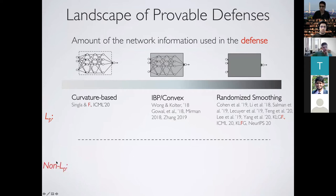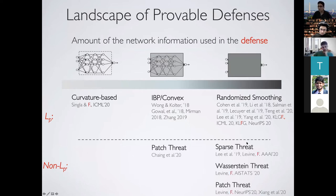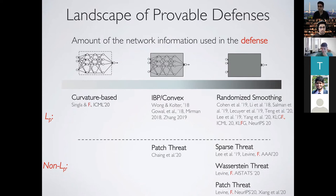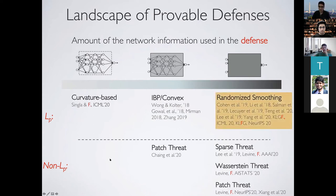Robustness against LP is necessary but not sufficient, so we also need to think about non-LP attacks. There are defenses against sparse threat models, the Wasserstein threat model, and the patch threat model. I'm going to try to give a flavor of at least some of these defenses — starting with randomized smoothing-based defenses, then a provable defense against sparse attacks.